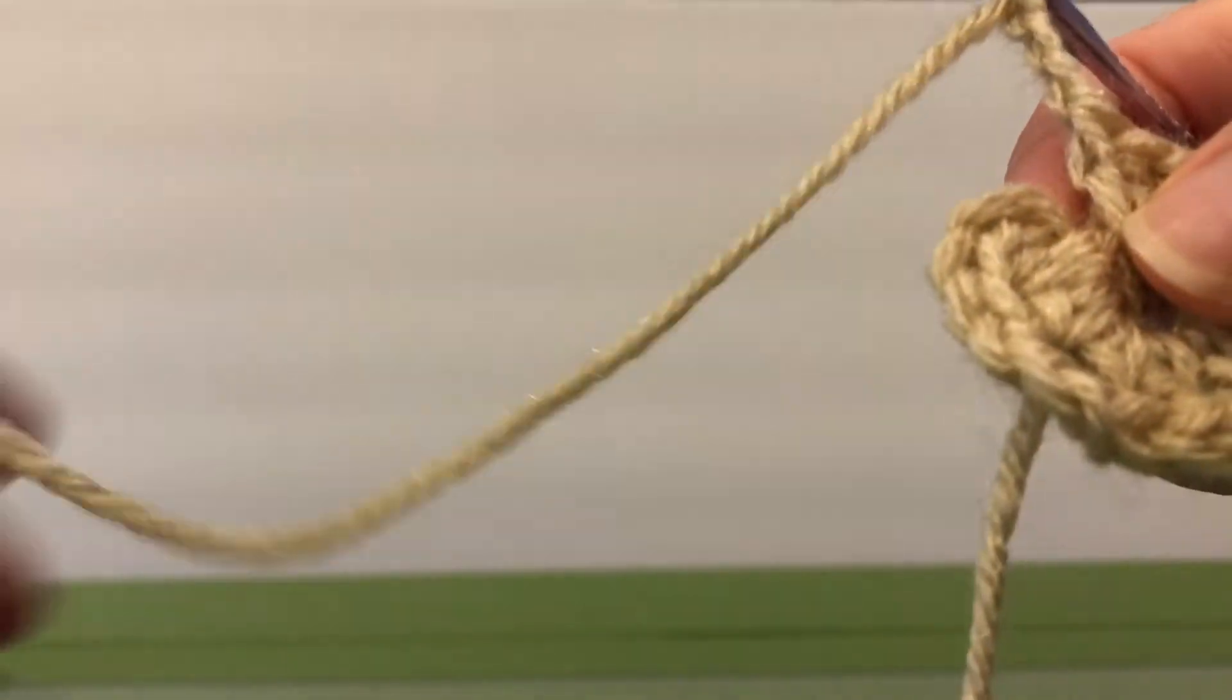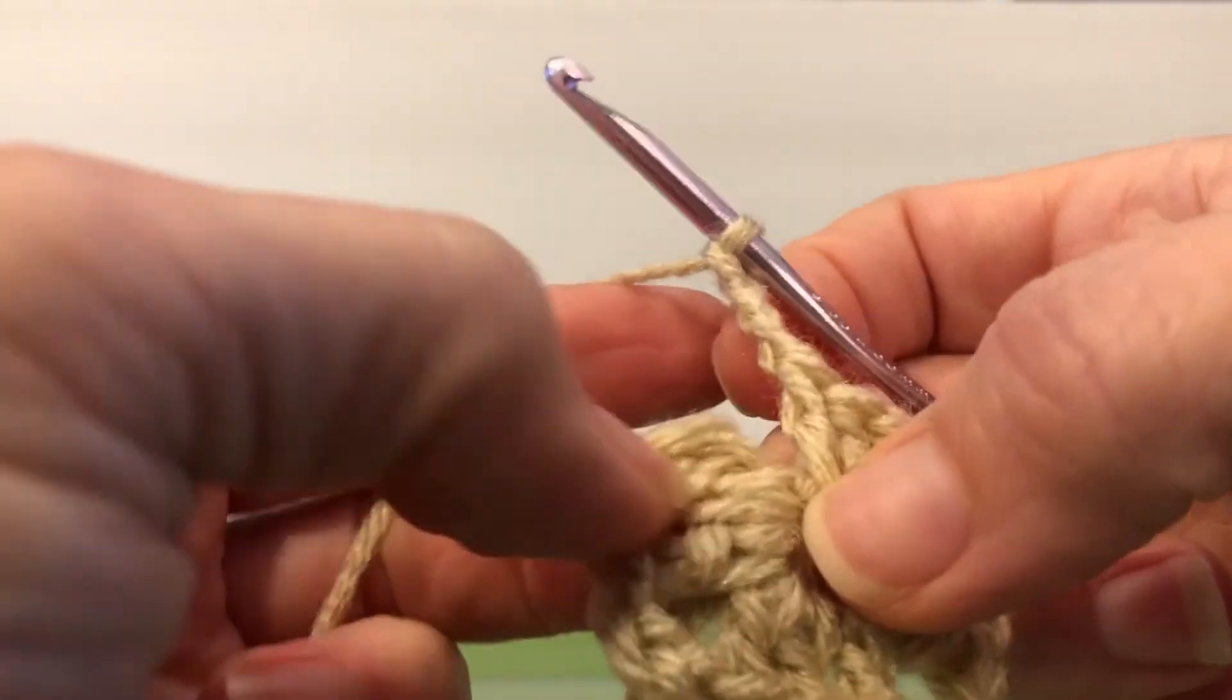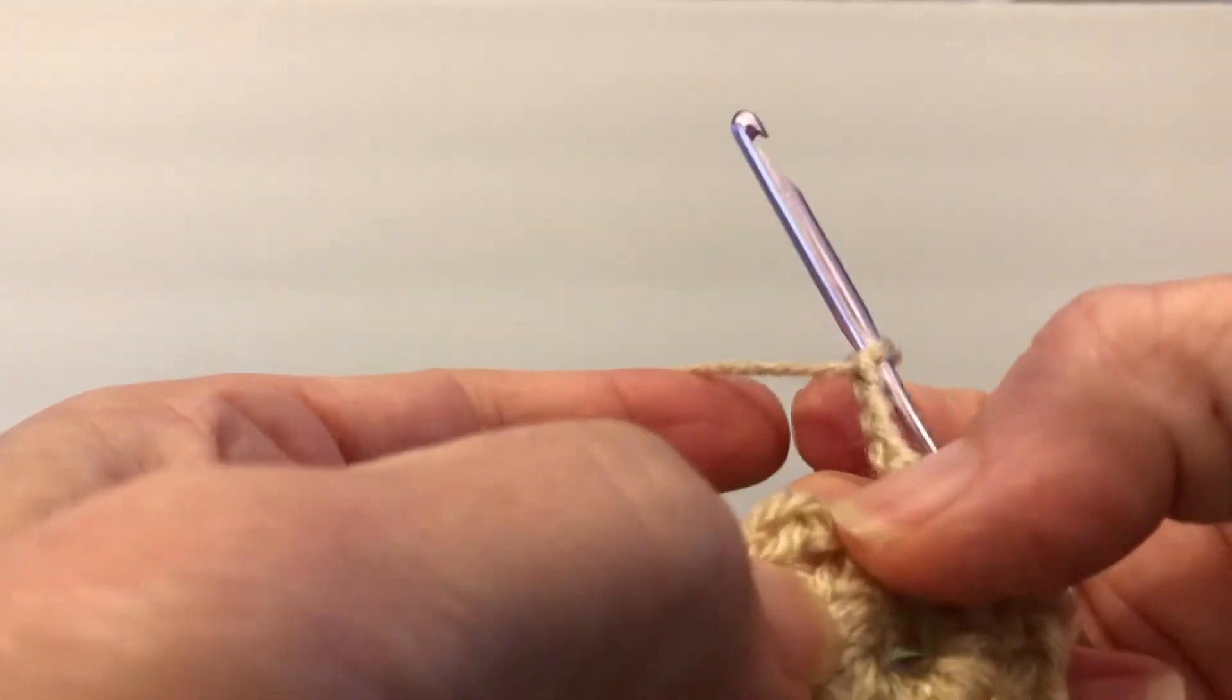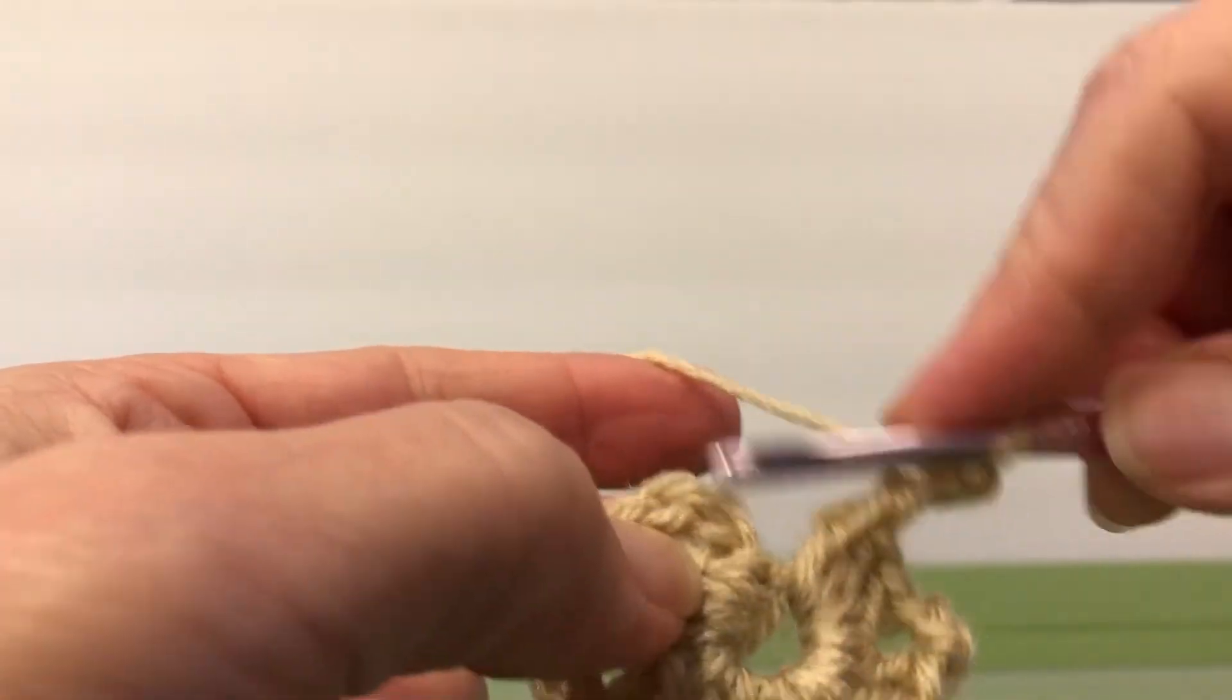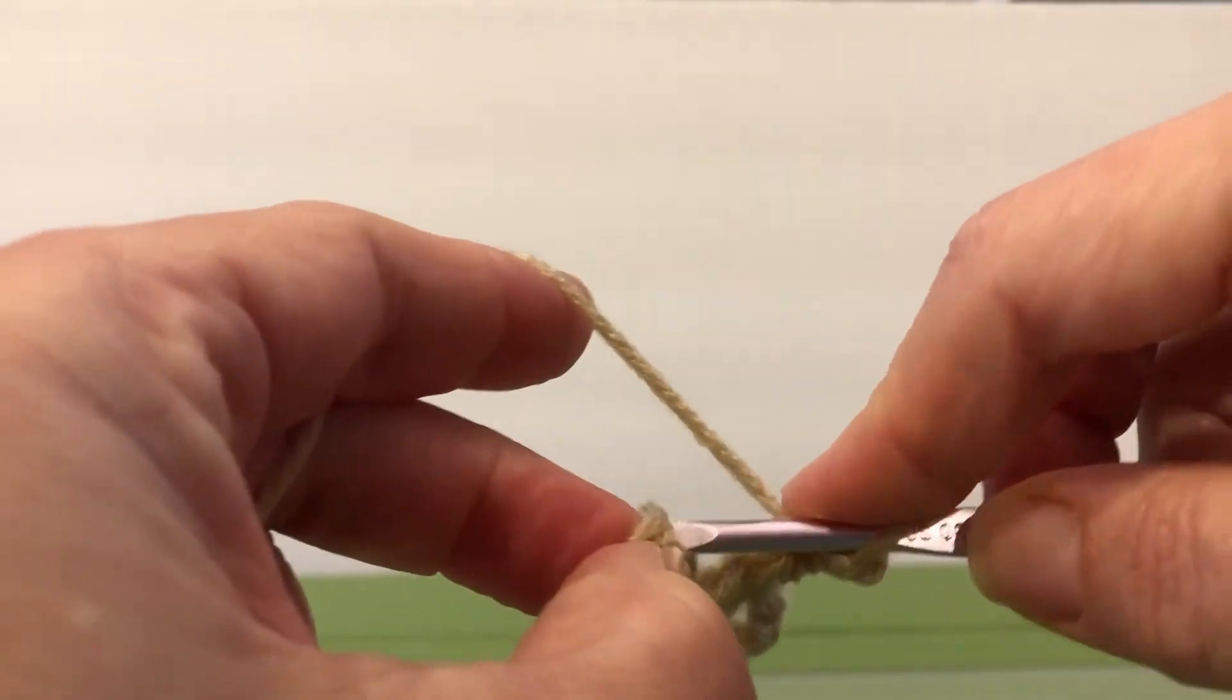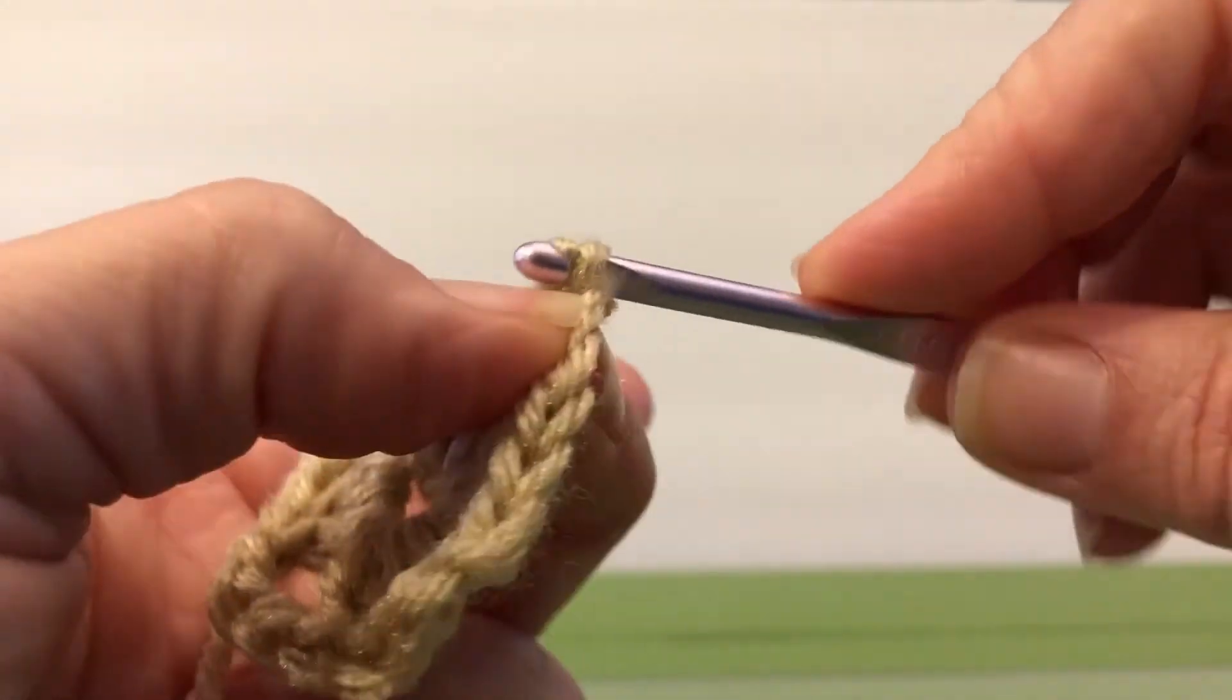And now we're going to slip stitch into the top of the first chain three. So remember at the very beginning, we made this chain three here. One, two, three. So we're going to slip stitch into the top. Trying to find my first one. Here we go. So we're going to enter, pull through, and pull through again.